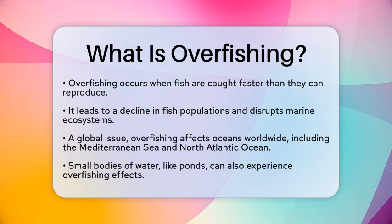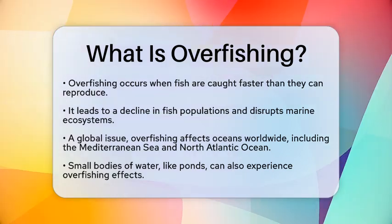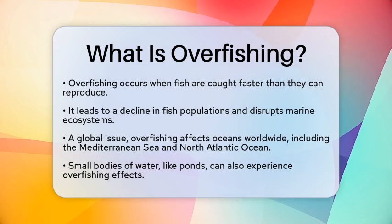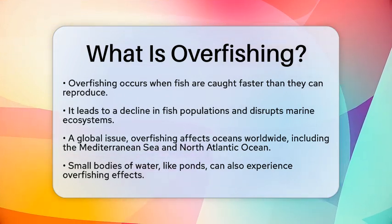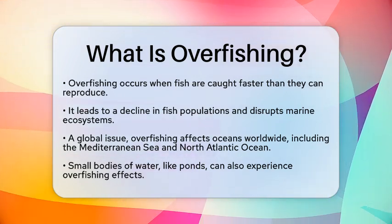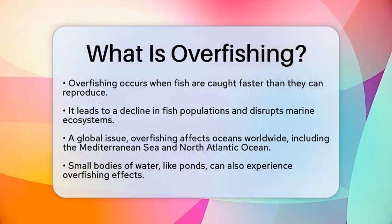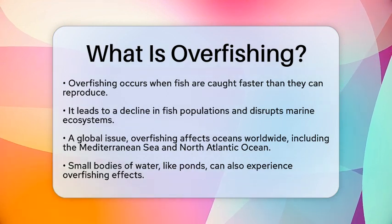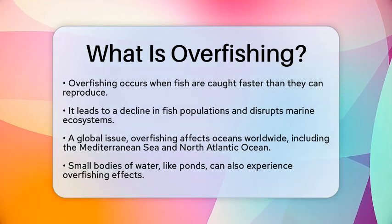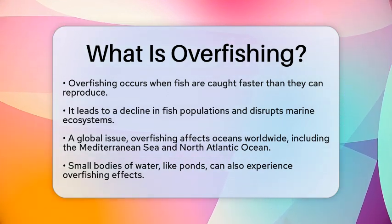Overfishing occurs when fish are taken from the sea at a rate that exceeds their natural ability to reproduce. This leads to a decline in fish populations, which can disrupt entire marine ecosystems.